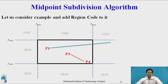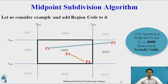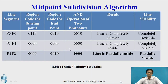Next, consider line segment P1P2 where P1 has region code 0000 and P2 has region code 0010. The AND operation of 0000 and 0010 gives 0000. Hence we can say that the line is partially visible. We now need to build the inside visibility test table, which contains the line segment, starting and ending points with region codes, the AND operation, and the result — completely visible, invisible, or partially visible. We then apply the midpoint subdivision algorithm on the partially visible line segment P1P2.